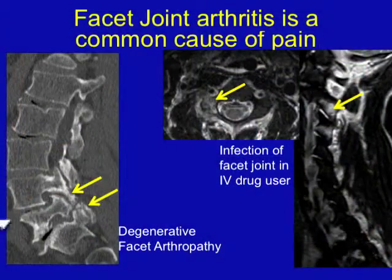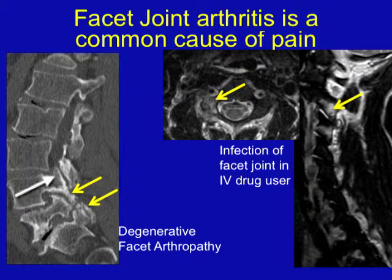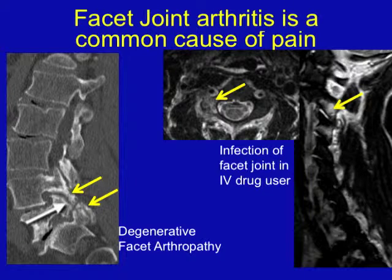Here's just an example of degenerative facet disease. You see how irregular this bone is — it's not smooth, it's irregular. There are little divots and little cysts.